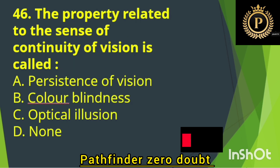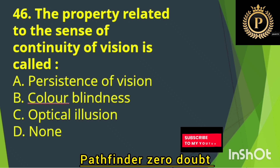The property related to the sense of continuity of vision is called — Option A: Persistence of vision.